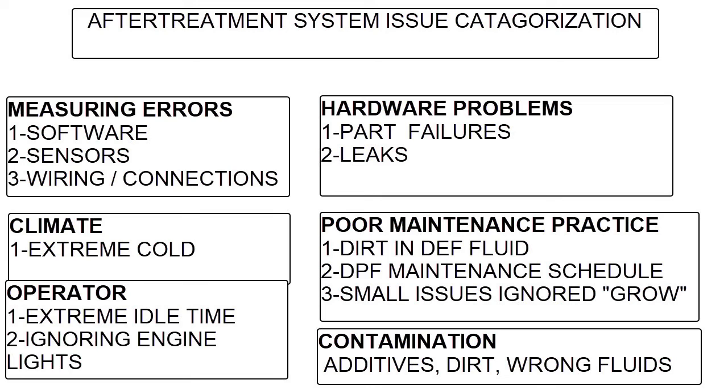Next is the operator on the bottom left. If the operator allows extreme idle time or check engine lights come on and he doesn't stop and get the thing looked at. Over on the top right, we've got hardware problems. Those would be parts failures or joint leaks where you have smoke coming out of the pipes. You should never see that.